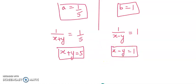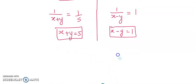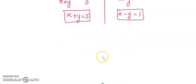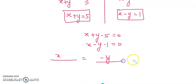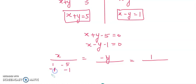We cannot do elimination because we are using cross multiplication. So again, we have to write the equations in cross multiplication format — meaning the 5 and the 1 will shift to the left. So it will become x plus y minus 5 equals to 0, and x minus y minus 1 equals to 0. Now, x upon, minus y upon, and 1 upon: for x we take the coefficients 1 and 1 with constants minus 5 and minus 1.